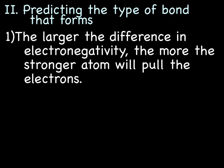So, predicting the type of bond that forms. The larger the difference in electronegativity, the more the stronger atom will pull the electrons. And if the difference is great enough, the stronger atom will steal.